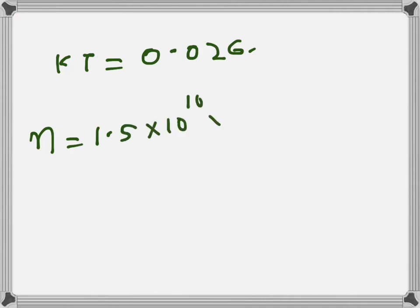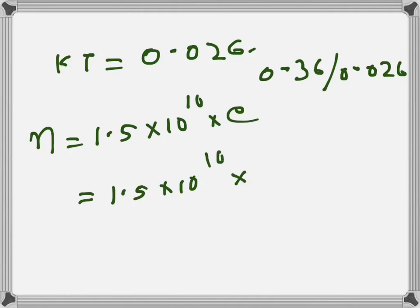We can find n is equal to 1.5 into 10 to the power 10 times e to the power 0.36 divided by 0.026, which gives 1.5 into 10 to the power 10 times 9.45 into 10 to the power 5, and it's almost 1.43 into 10 to the power 16.